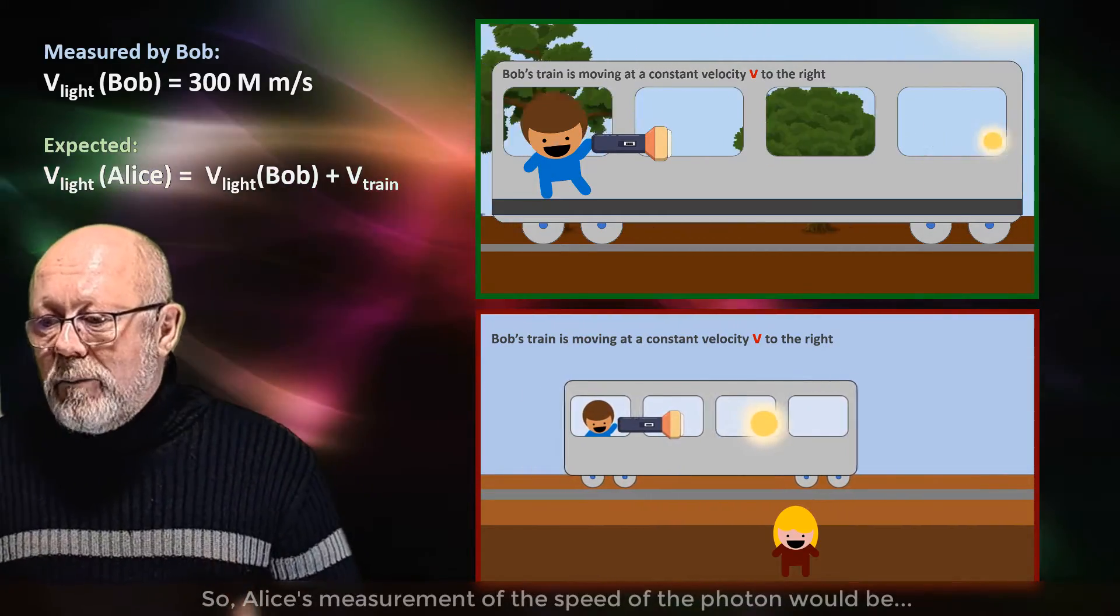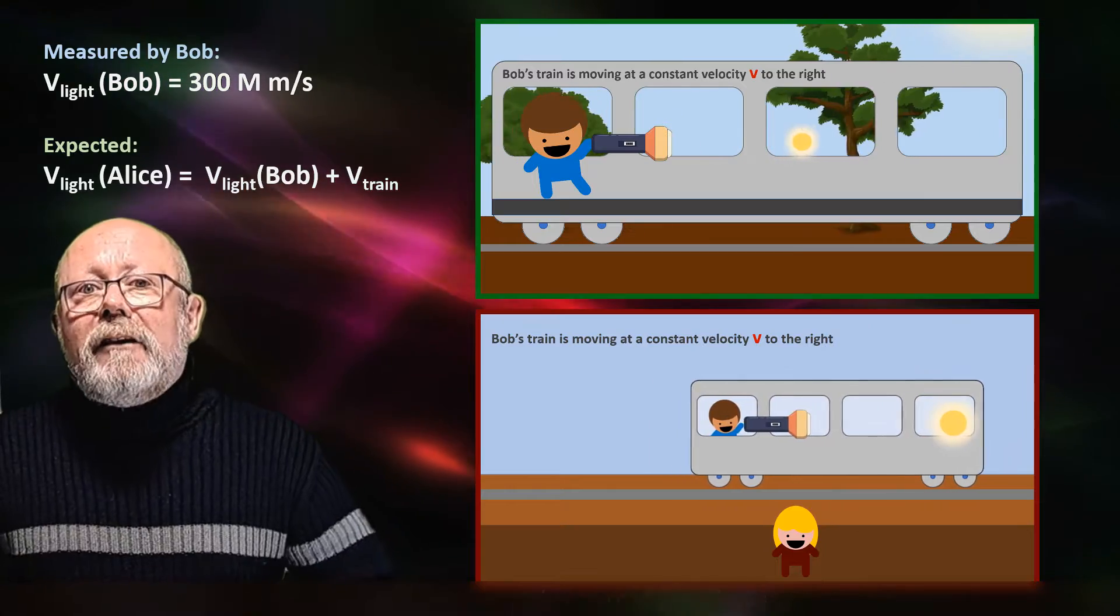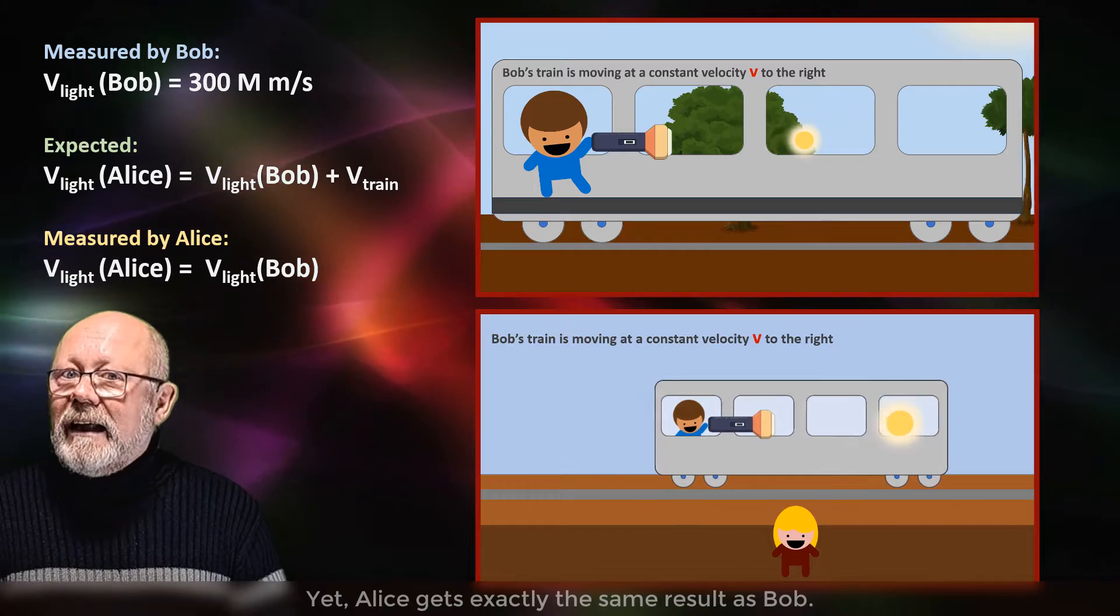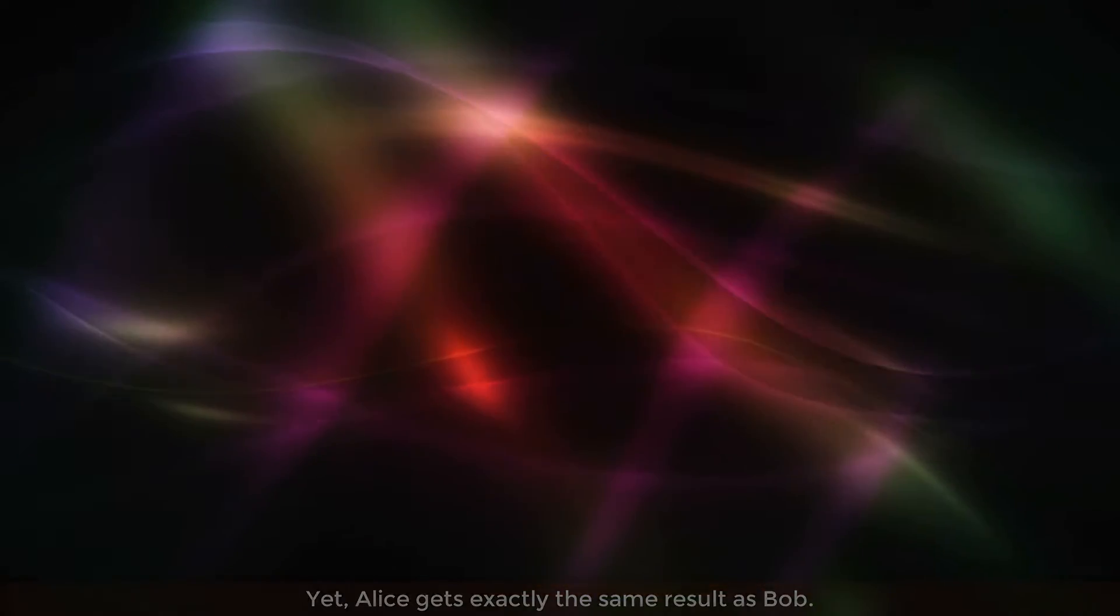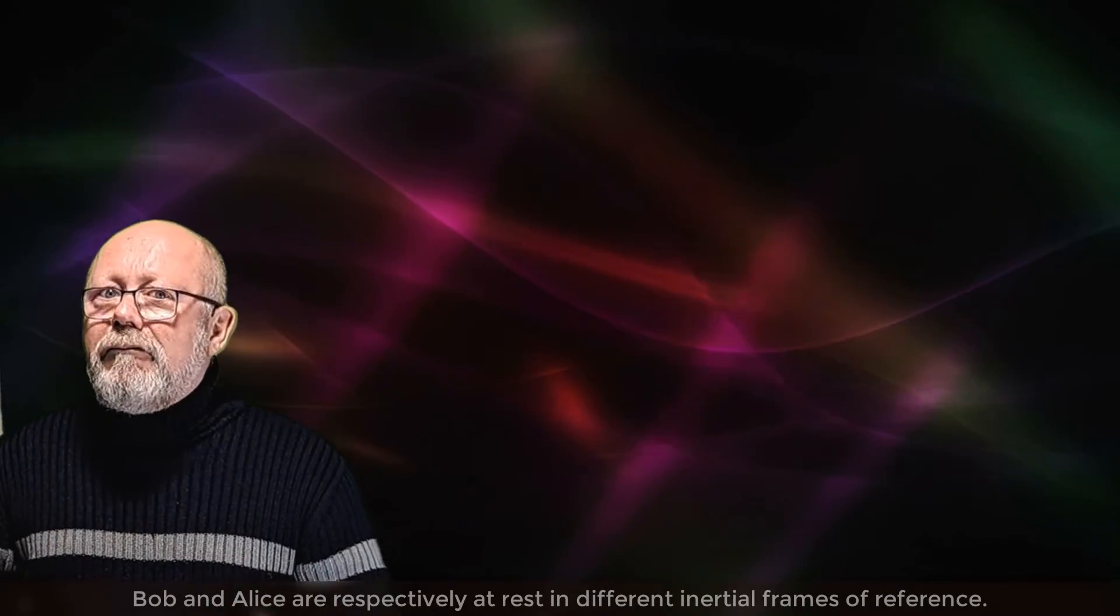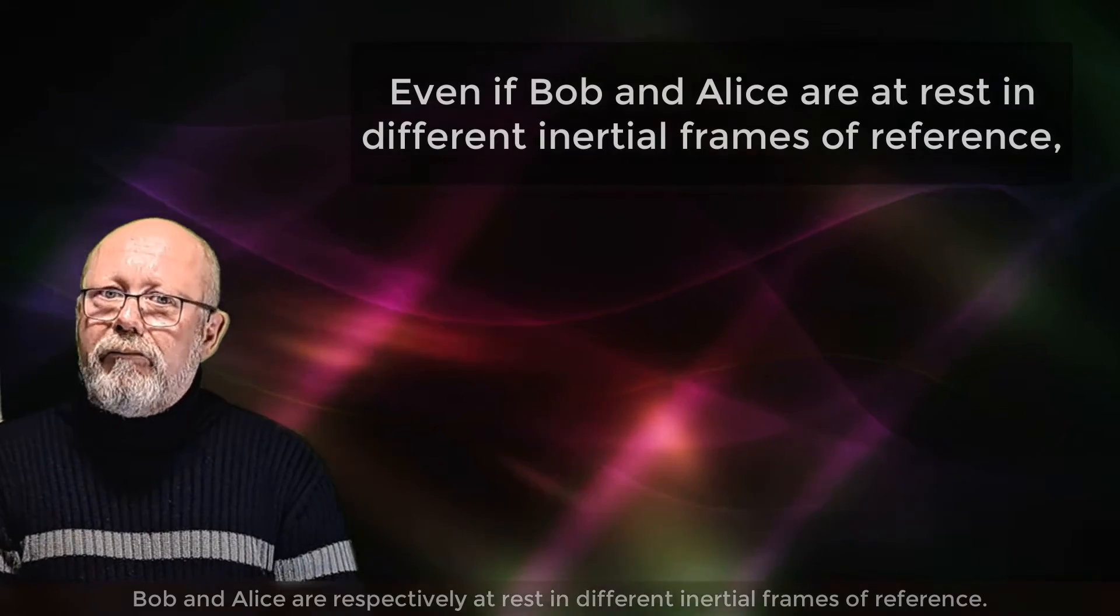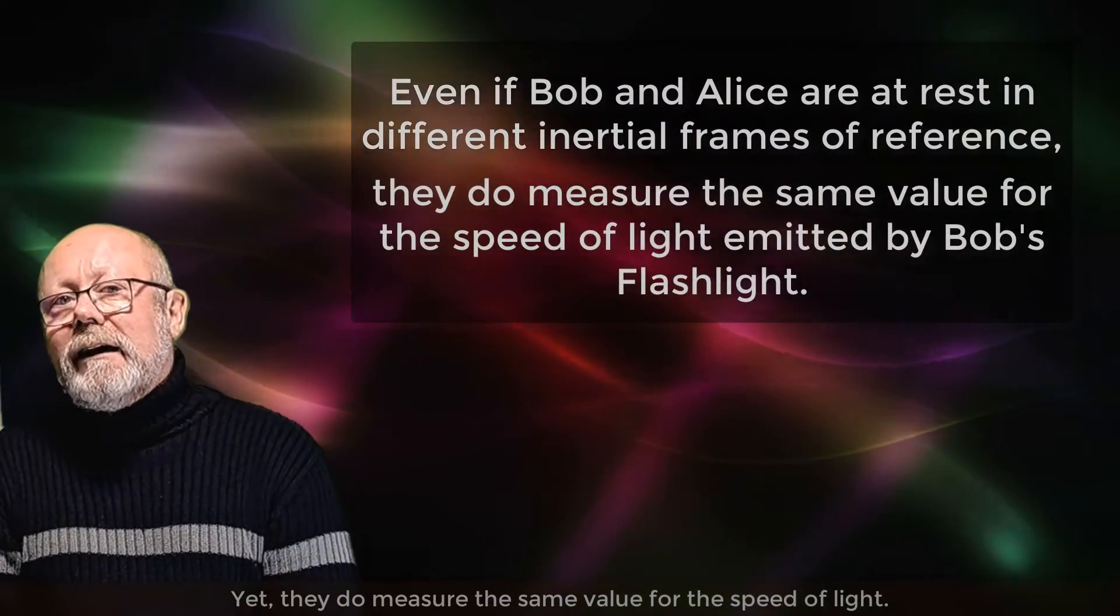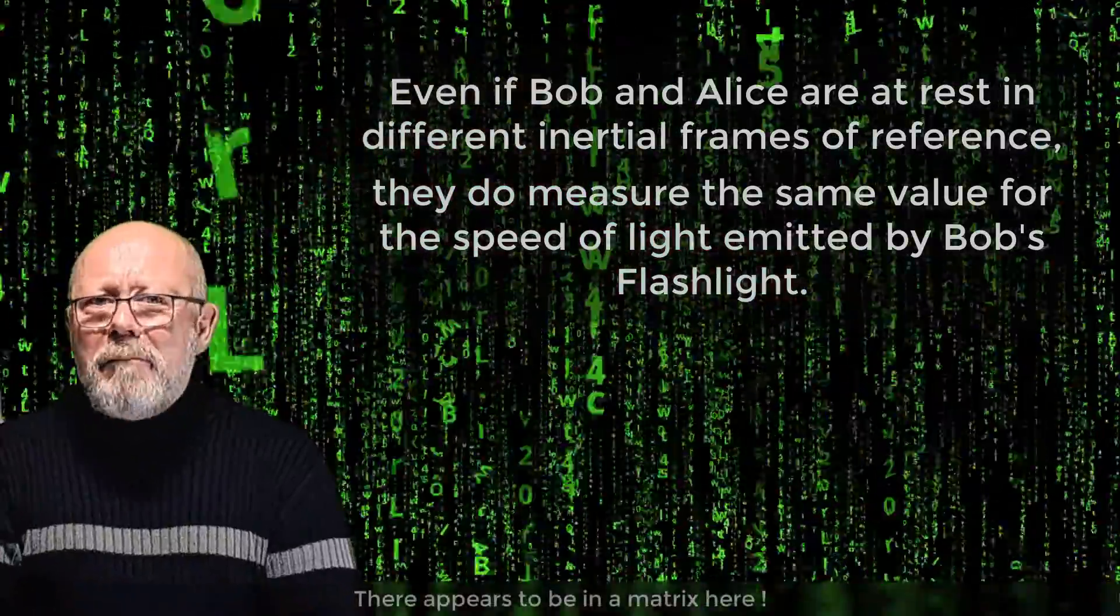So Alice's measurement of the speed of the photon would be a speed larger than 300 million meters per second. Yet, Alice gets exactly the same result as Bob. Bob and Alice are respectively at rest in different inertial frames of reference. Yet, they do measure the same value for the speed of light. There appears to be a bug in the matrix here.